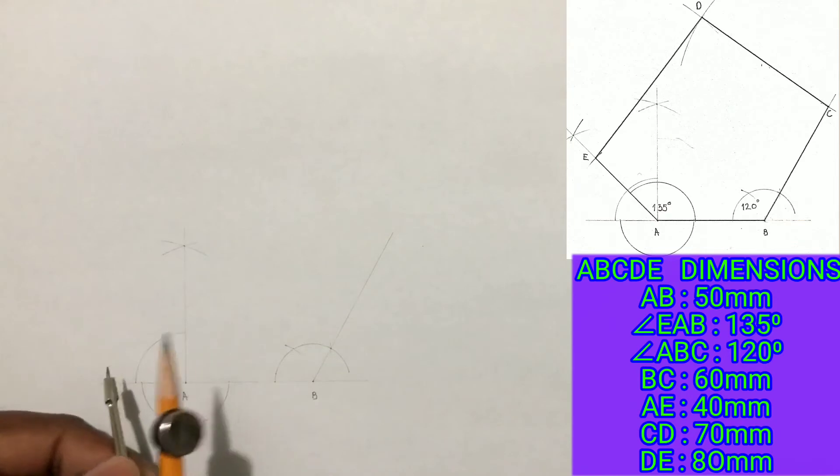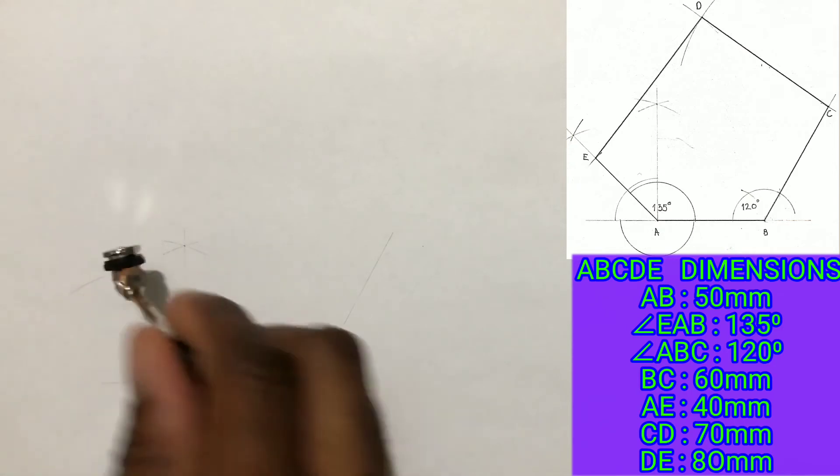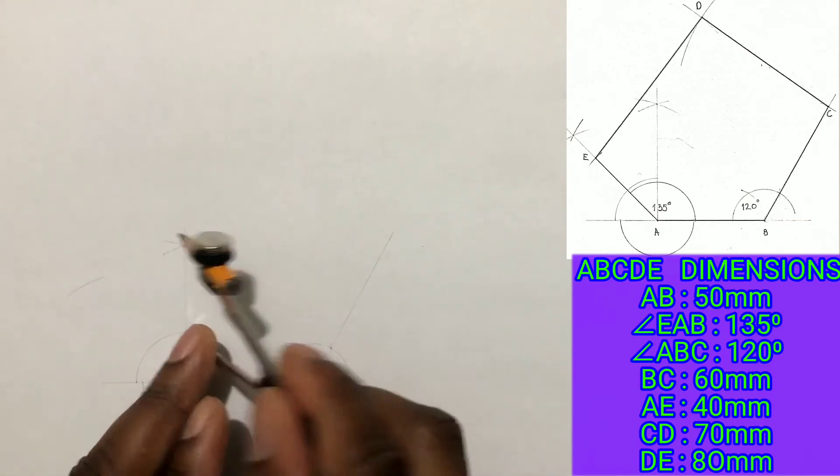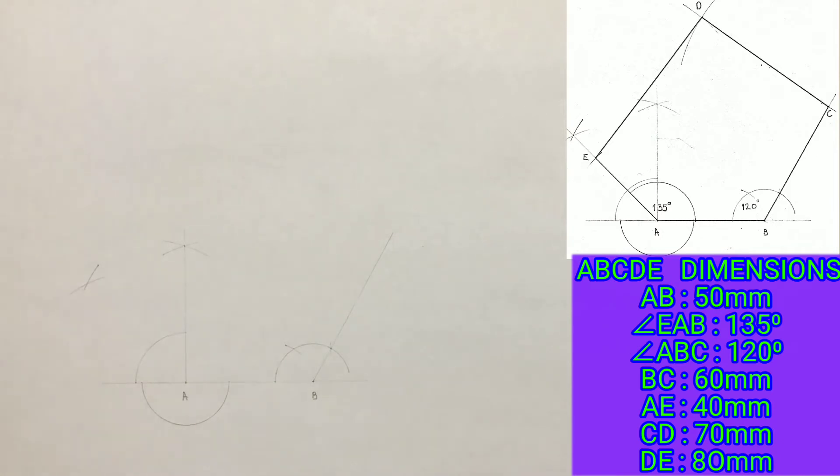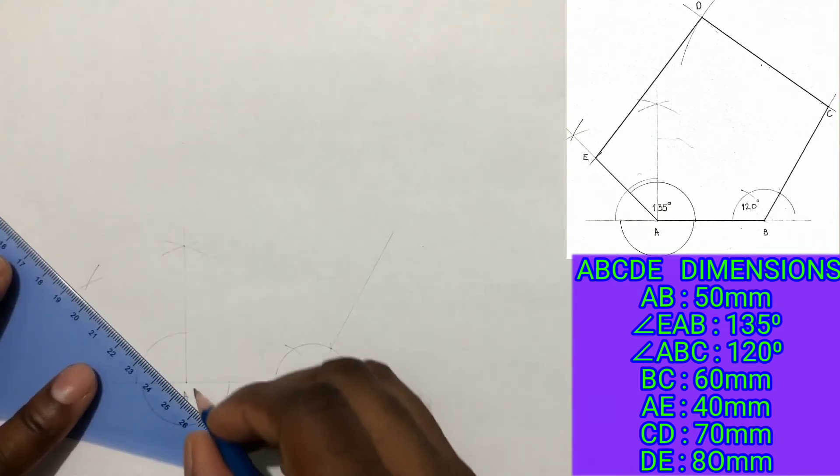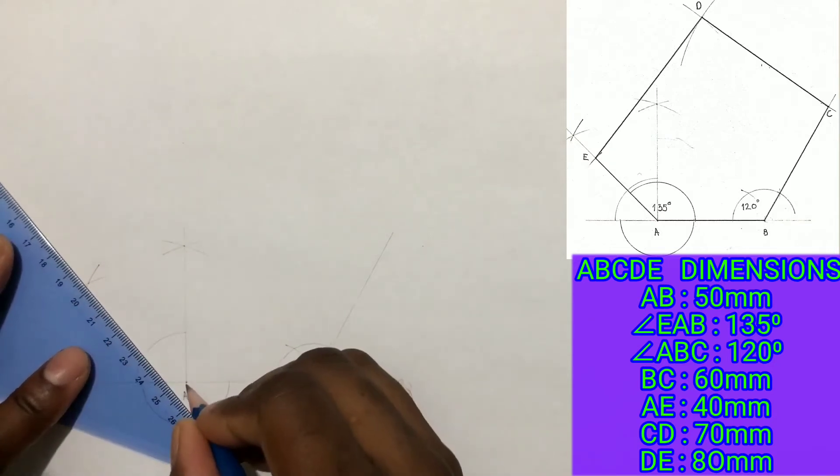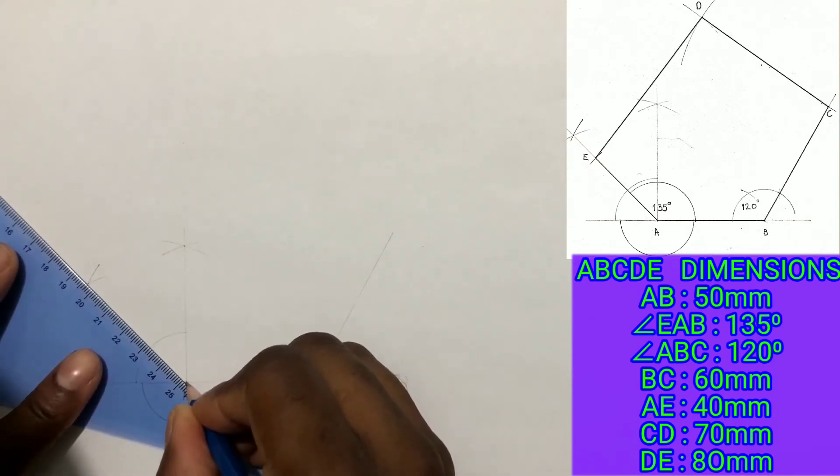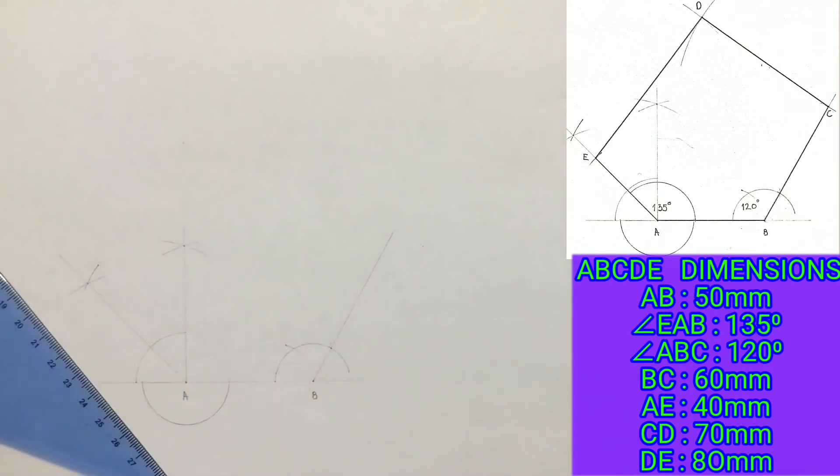Now extend your compass just a little more and from the intersection of the arcs and the lines, scribe arcs that will intersect each other. Now carefully identify your intersection of arcs and draw a line from point A through the intersection you identified. You have just constructed your 135 degree angle.